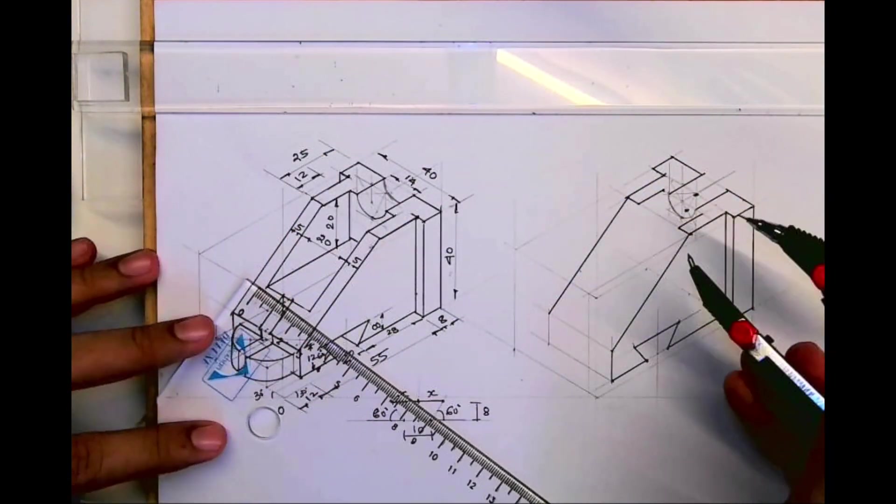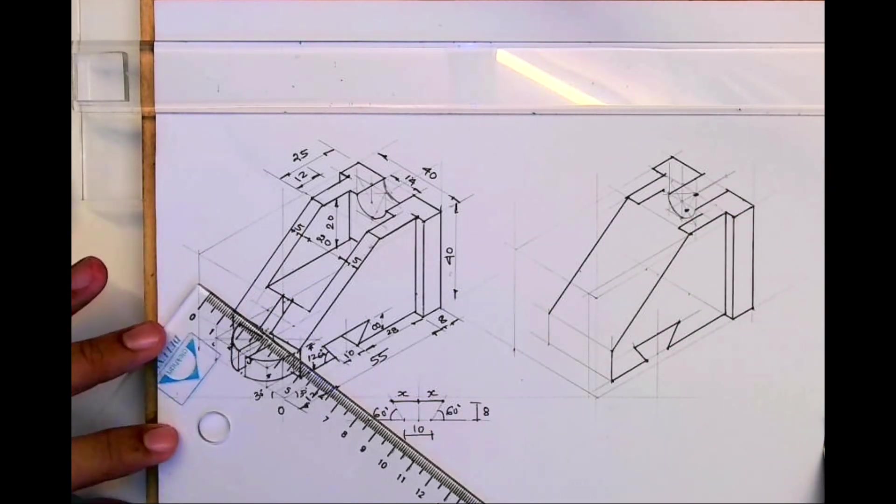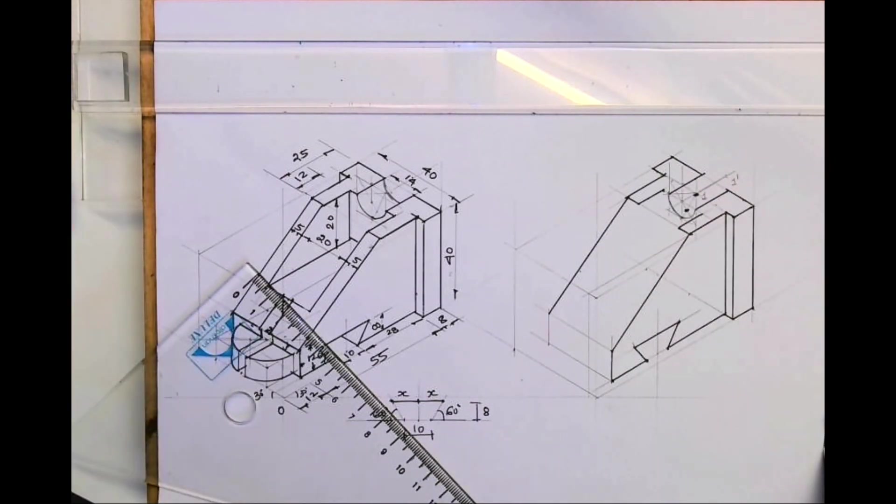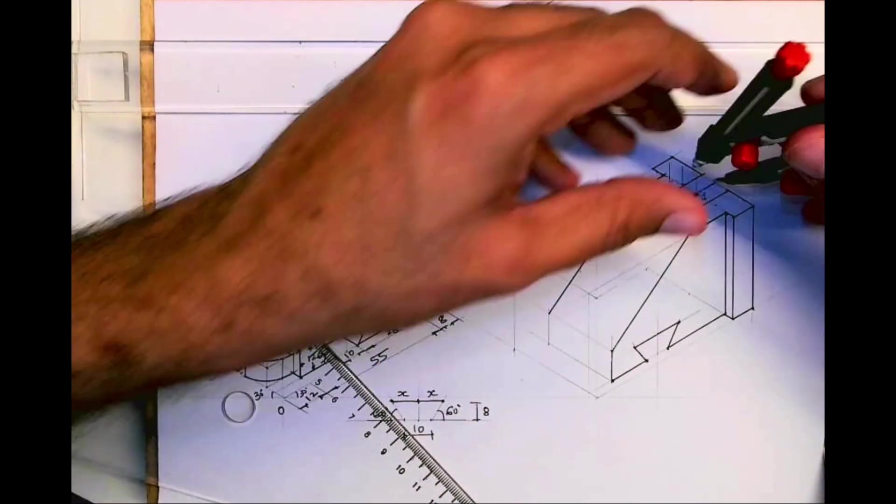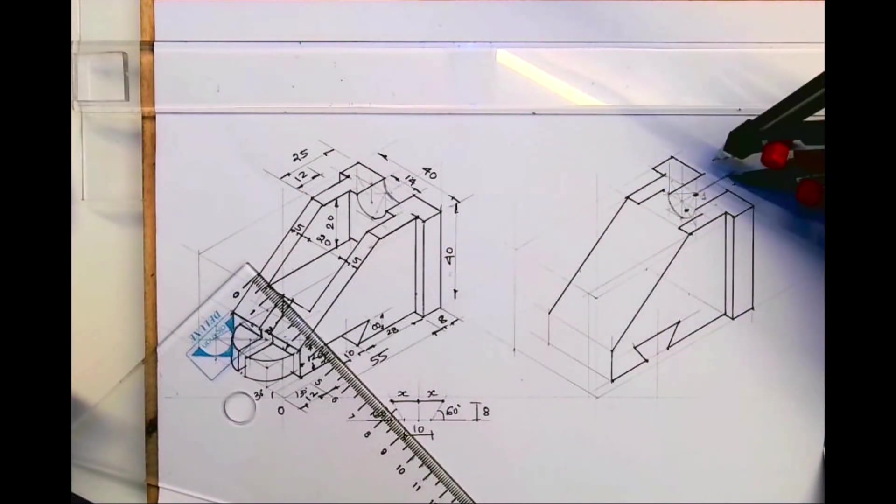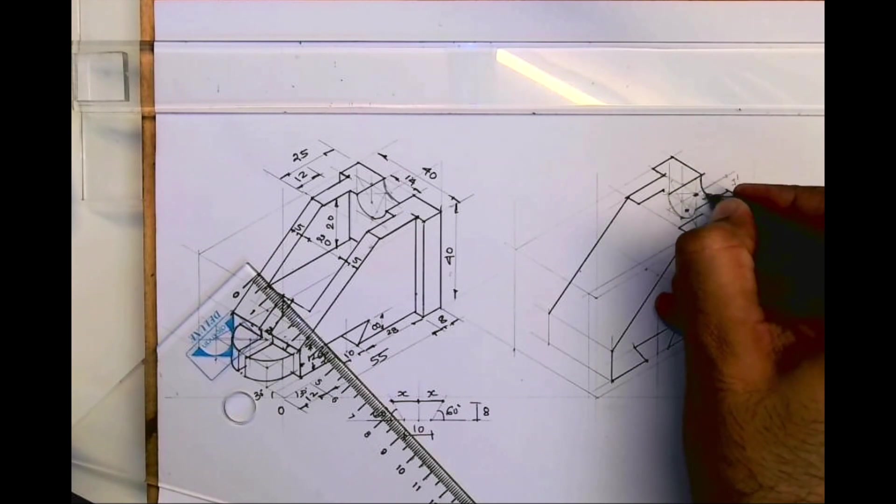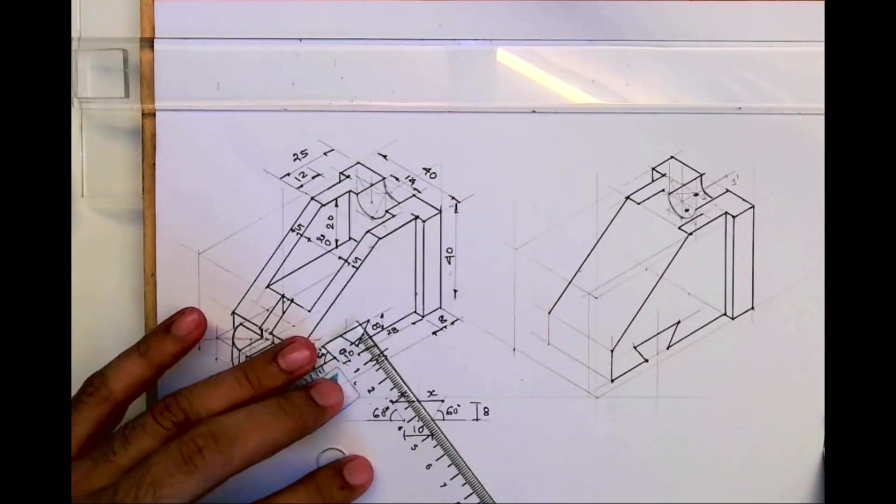Now from here you go behind. How much you have to go behind? This length, actually it is 25. See this one and one dash. Now from one you draw this arc, and from one dash, see this? You take this radius. From one dash again you draw that arc. Then you draw a vertical line.